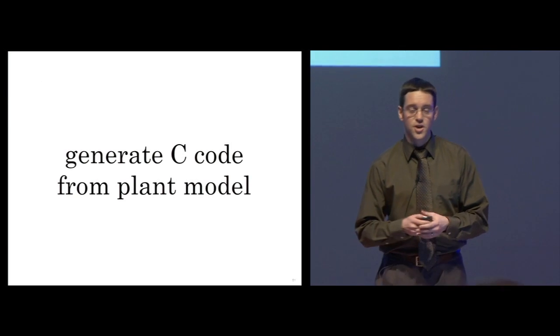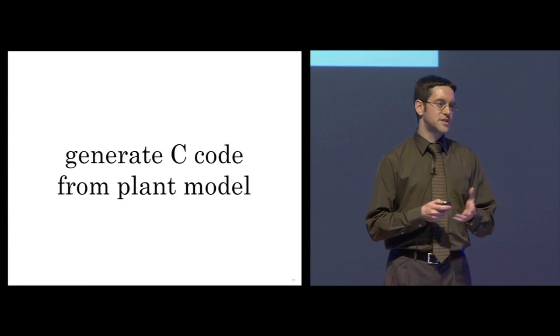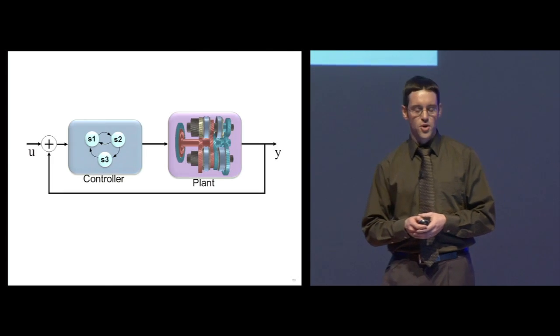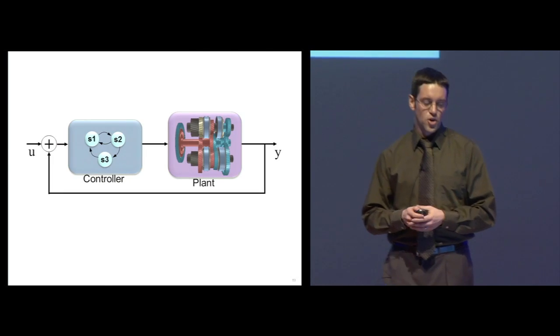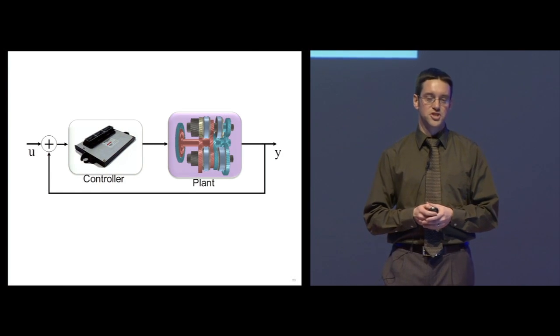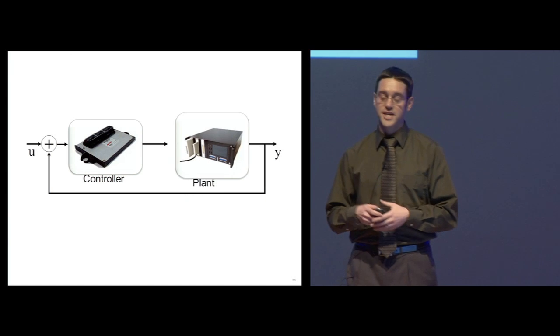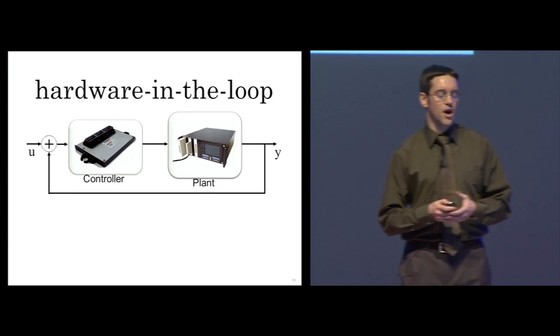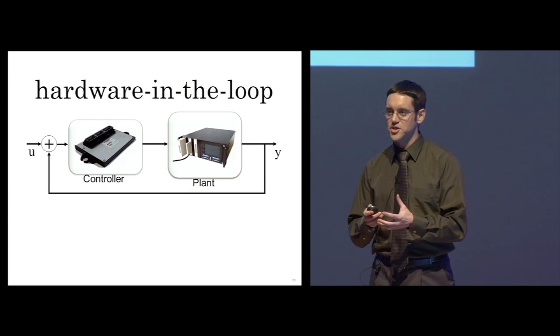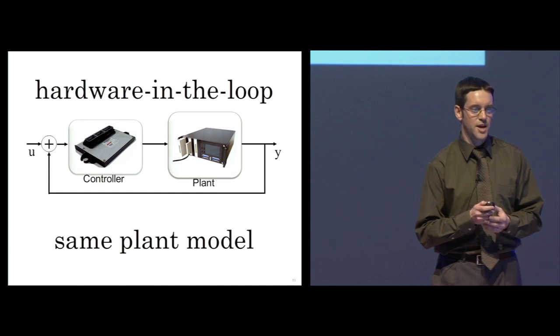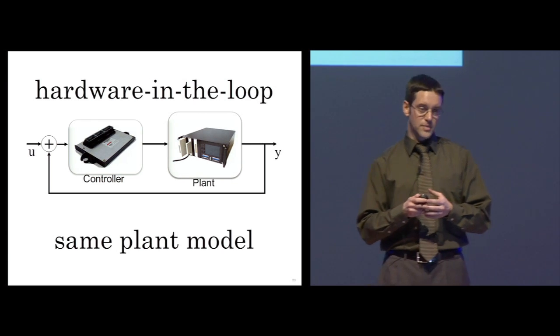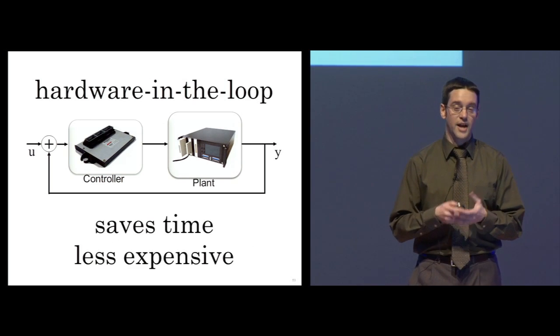You can also generate C code from your plant model. This enables you to test software without hardware prototypes. Using MathWorks products for embedded code generation, you can generate code from the algorithm, place it on the production ECU, but you can also use the same tools to generate code from the plant model, place it on a real-time computer, and test using hardware in the loop testing. What this means is that you can test your production software and your production ECU with the same plant model that you used in desktop simulation. Using the same plant model means that you will be saving time and it will be less expensive.